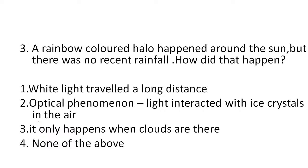The next question is: a rainbow-colored halo appeared around the sun but there was no recent rainfall — how did that happen? Option one: white light travelled a long distance. Option two: it is an optical phenomena — light interacted with ice crystals in the air. Option three: it only happens when clouds are present. Option four: none of the above.